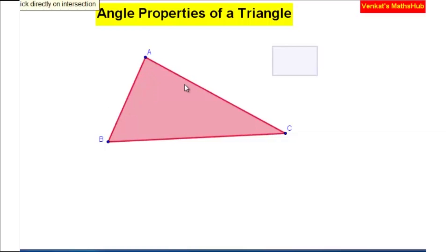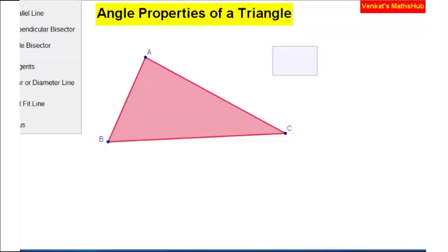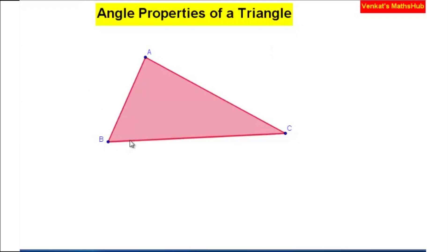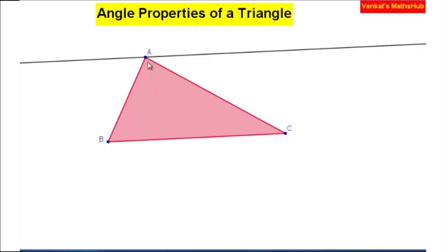I am going to prove the sum of the three angles of a triangle. To do that, I am going to draw a line parallel to BC through the point A. I have drawn that line parallel to BC through point A.